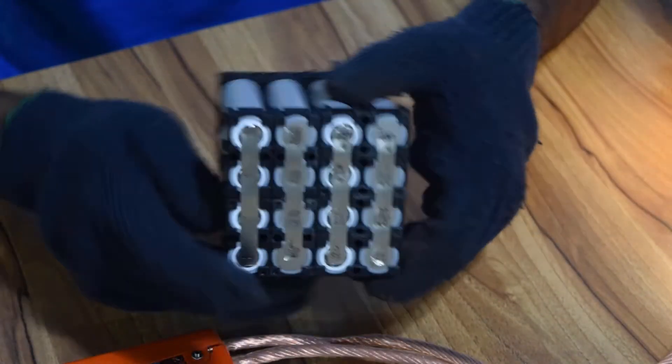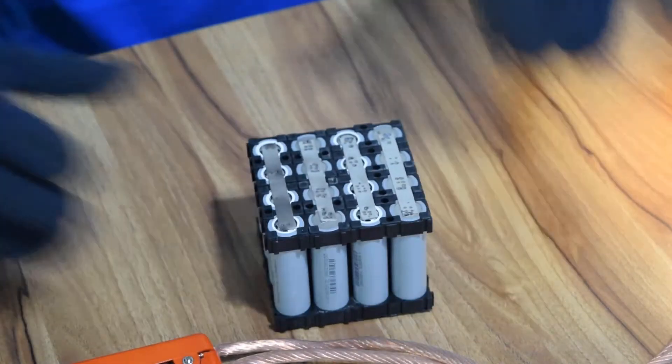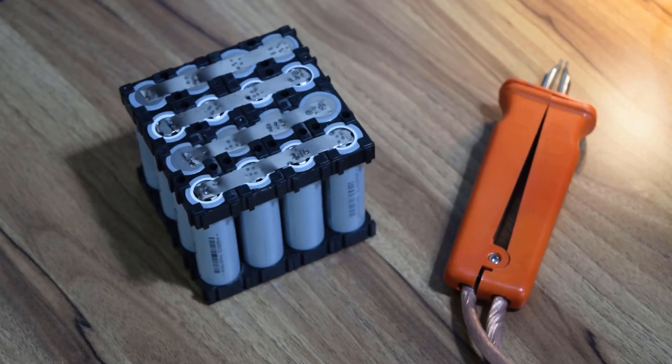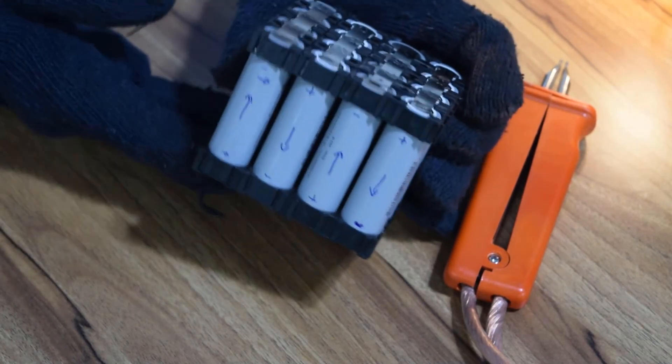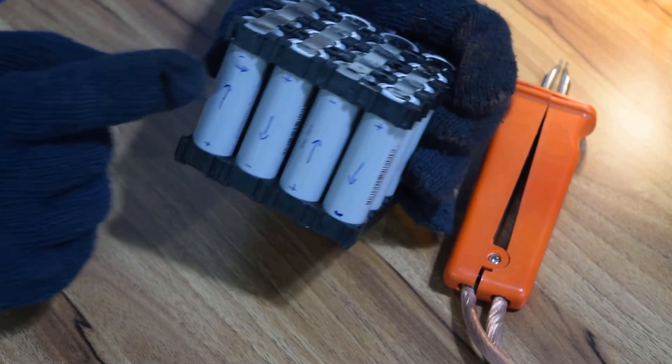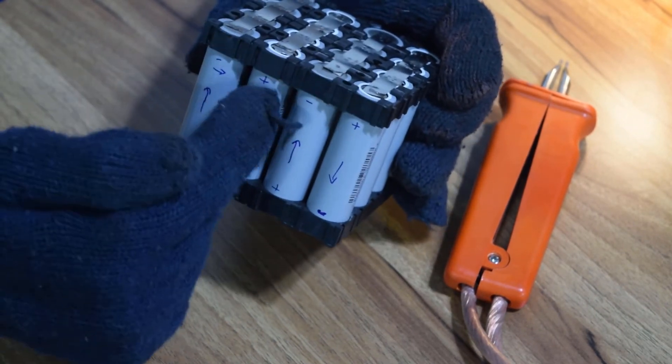Let us now begin with the 4S series connection. When the positive terminal of one cell is connected to the negative terminal of the other, it forms a series connection. Follow the arrow direction as shown here to complete the 4S connection.